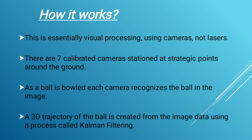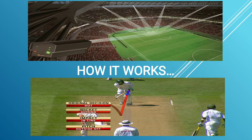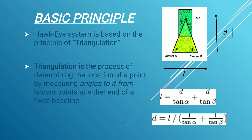A 3D trajectory of the ball is created from the image data using a process called camera triangulation. Here is the image of the camera focused on the pitch, and this is the review system. Hawkeye follows a basic principle called triangulation, which is the process of determining the location of a point by measuring angles from known points.